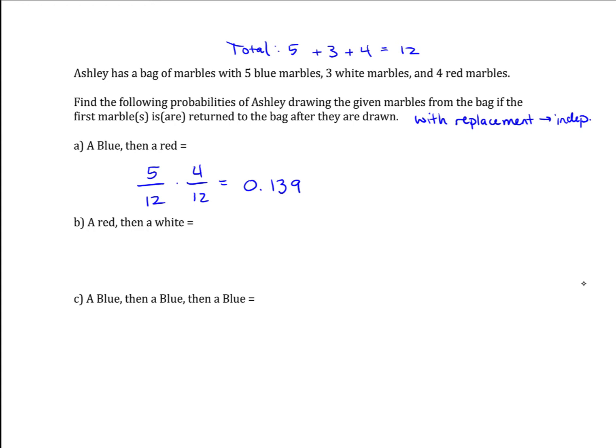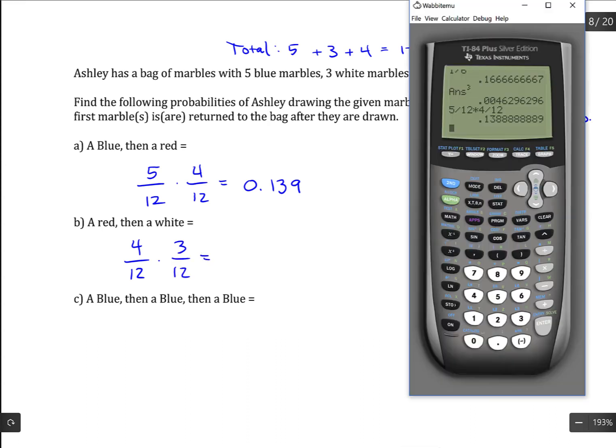A red and then a white. A red marble has a 4 out of 12 possibility of being chosen. White has a 3 out of 12 possibility. So 4 over 12 times 3 over 12 equals 0.083.